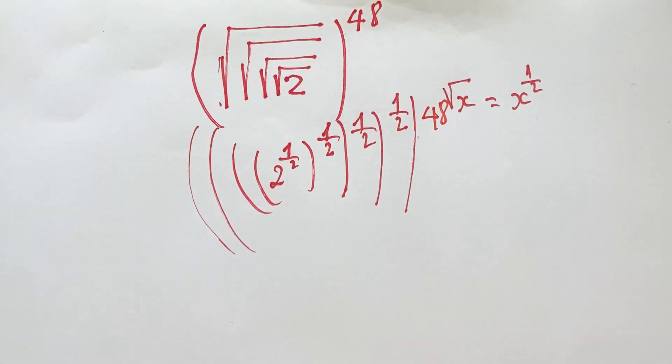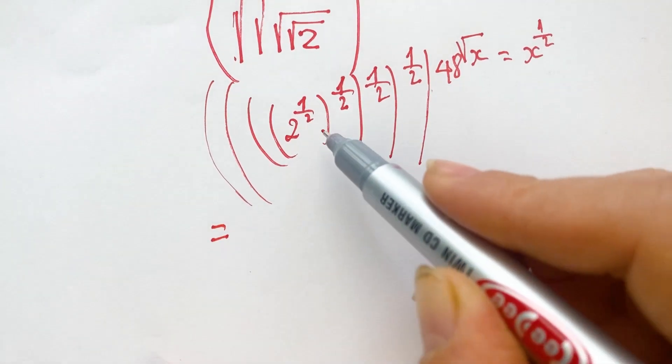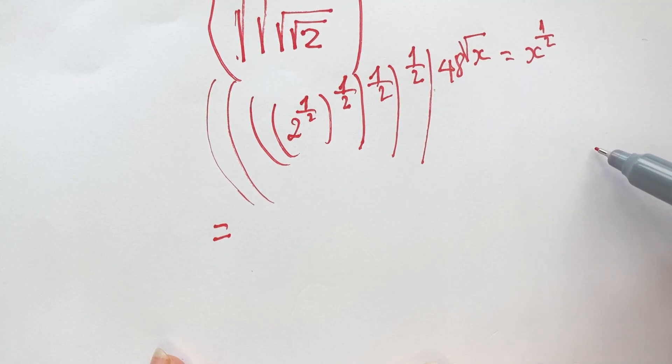We can use the exponential rule: a to the power n in brackets to the power m equals a to the power of n times m.